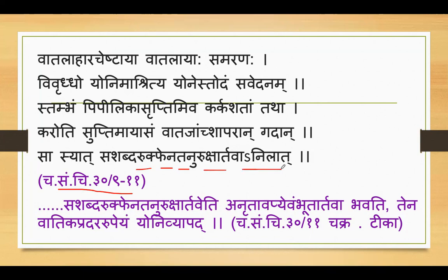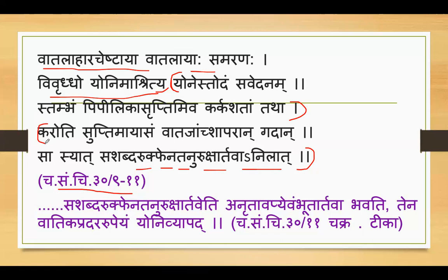This shlok can be divided into three parts. First is Nidan of Vati ki Yoni Vyapat, second is Samprapti of Vati ki Yoni Vyapat, and third is Lakshan of Vati ki Yoni Vyapat. The Lakshan has three sub-parts: local yoni-gut symptoms related to the reproductive tract, generalized symptoms developing in the whole body, and menstrual blood related symptoms appearing during menstruation.